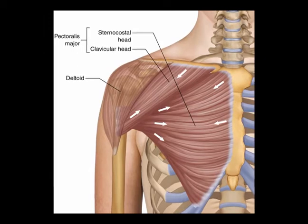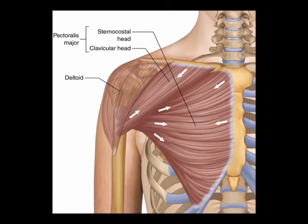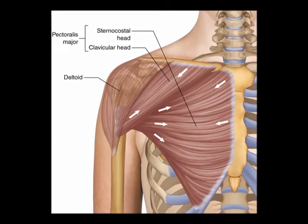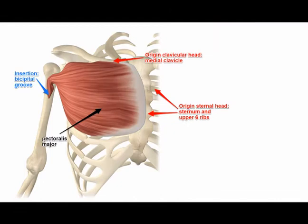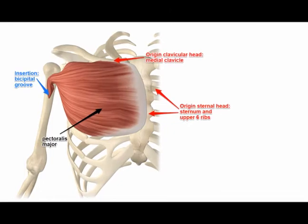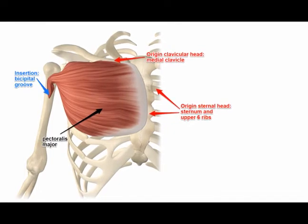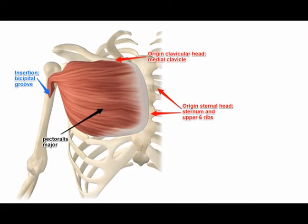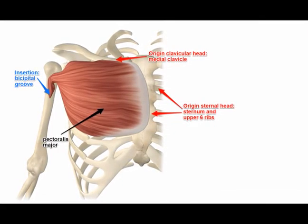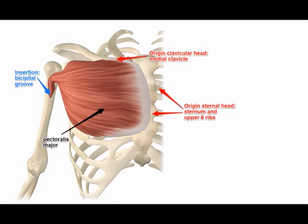The sternocostal head is located inferior to the clavicular head. There are multiple origin sites of the pectoralis major muscle. These include the head of the clavicle,